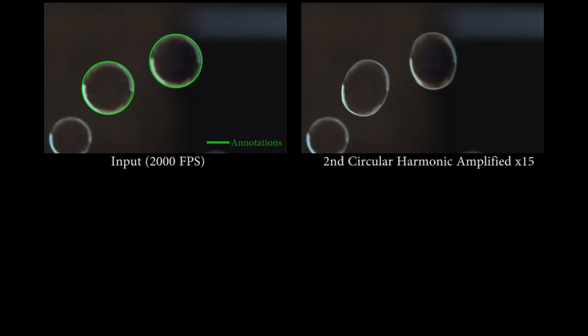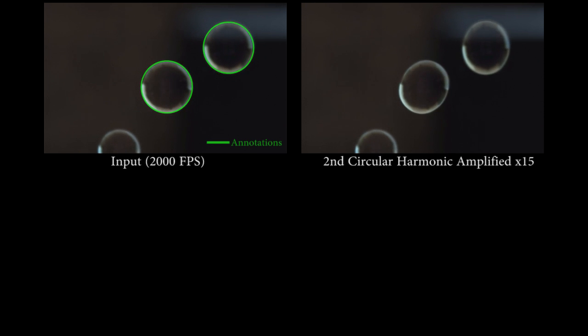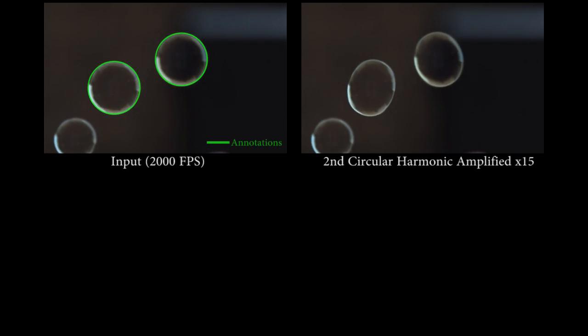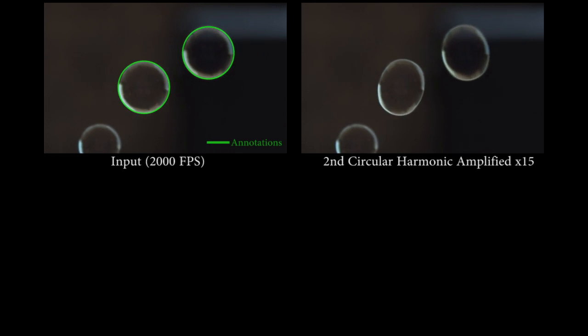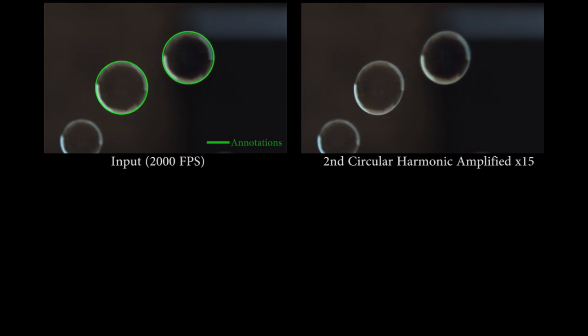We filmed several bubbles with a high-speed camera after their generation. For every frame in the sequence, we automatically fit circles to the bubbles. We then amplify the second circular harmonics of both bubbles by 15 times, revealing their dynamics. Each frame was processed independently.